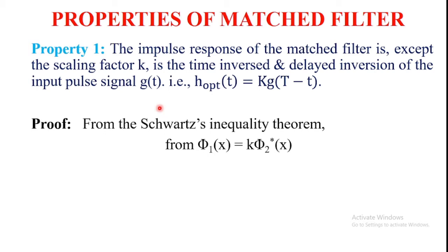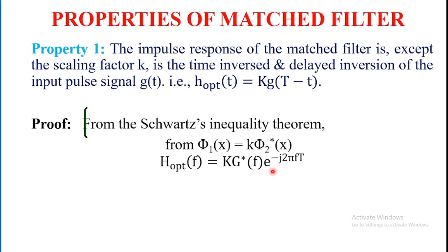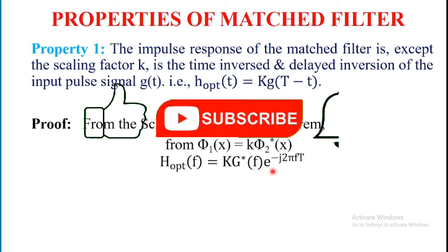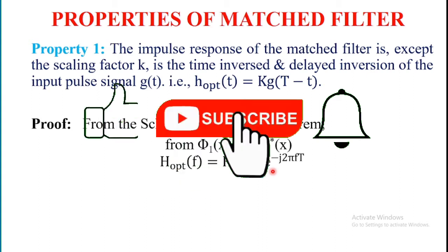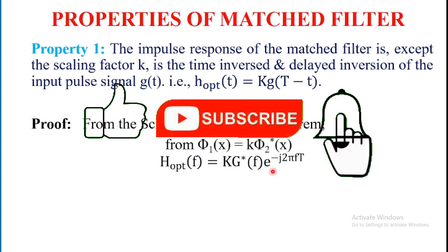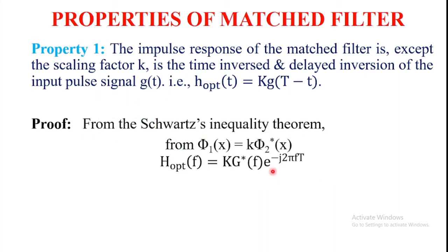Therefore, using this expression φ₁(x) = k · φ₂*(x), H_optimum(f) — which is the optimum value of the frequency response of the filter — is equal to k · G*(f) · e^(-j2πfT).